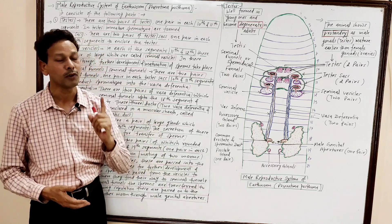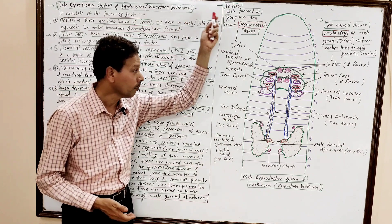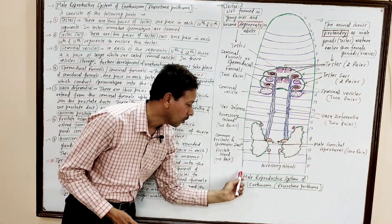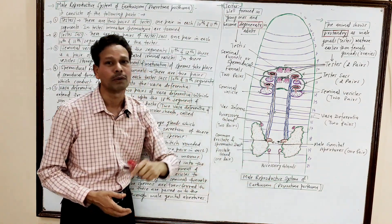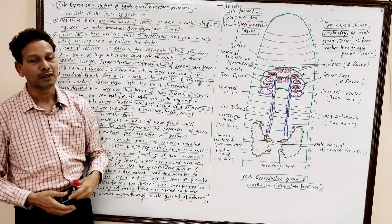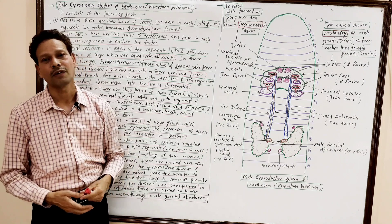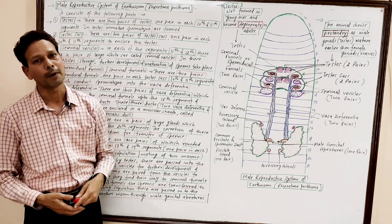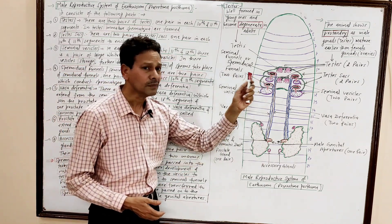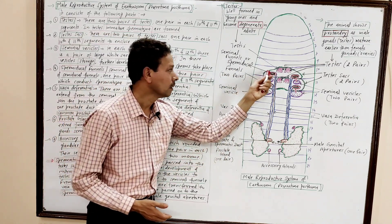Today we will cover the male reproductive system of Arthvom Pheretima posthuma. The male reproductive system of Arthvom consists of the following parts. First of all, we will discuss the testes.